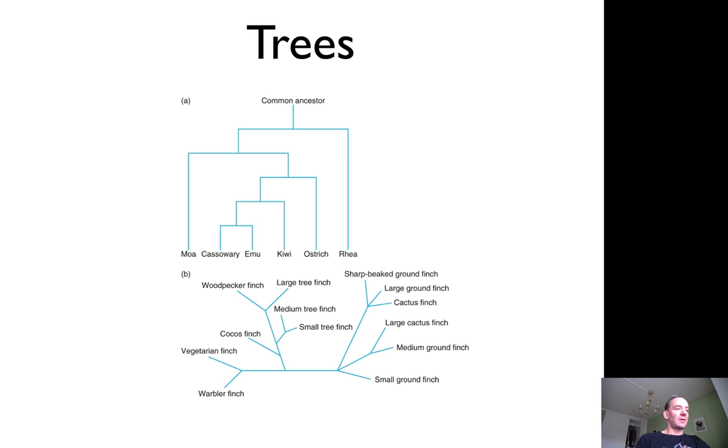What's in the bottom is a tree that just describes how these finches are related to each other. It doesn't describe the common ancestor. We don't know if that was more similar to a cactus finch or a small tree finch. That is what's called the unrooted tree.